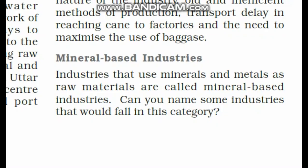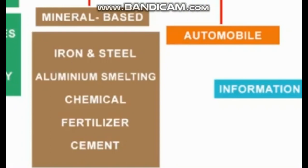Industries which use minerals and metals as raw material are called mineral-based industries. Can you name some of the industries that fall under this category? These include iron and steel industry, aluminium smelting, chemical industry, fertilizer industry, cement industry, and automobiles — all these are referred to as mineral-based industries.